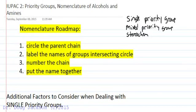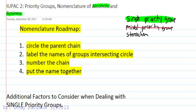This is our second video on IUPAC nomenclature and we're going to introduce priority groups, specifically alcohols and amines. Any previous discussion on alkanes and alkyl halides without priority groups can be seen in the first IUPAC nomenclature video. We're going to look today at single priority groups — not mixed priority groups, and not stereochemistry just yet. Today covers what happens if we have an alcohol or an amine individually in a molecule.